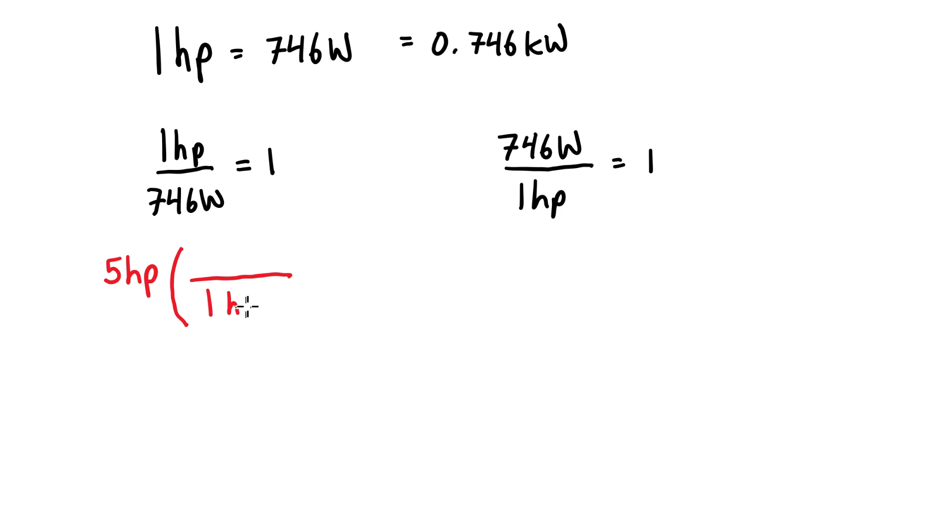So we'll just have 1 horsepower on the bottom and on the top we'll have 746 watts. So we get 5 horsepower—the horsepower cancels out—and we get 5 times 746, and that's just equal to 3,730 watts. You could divide that by a thousand if you wanted to, and you'd also see that this is equal to 3.73 kilowatts.